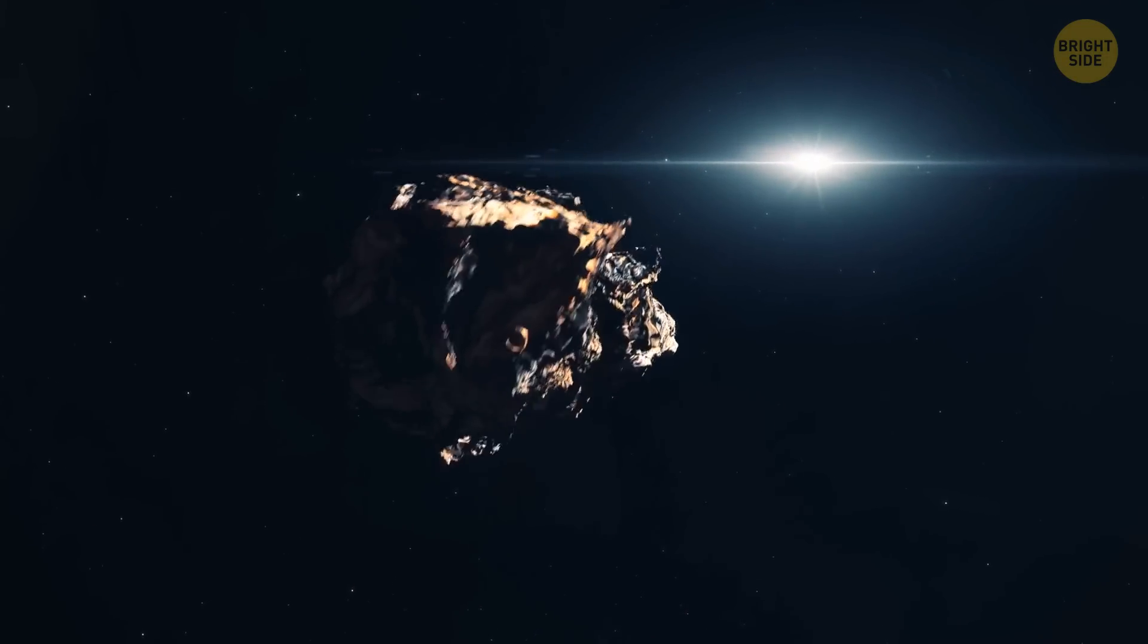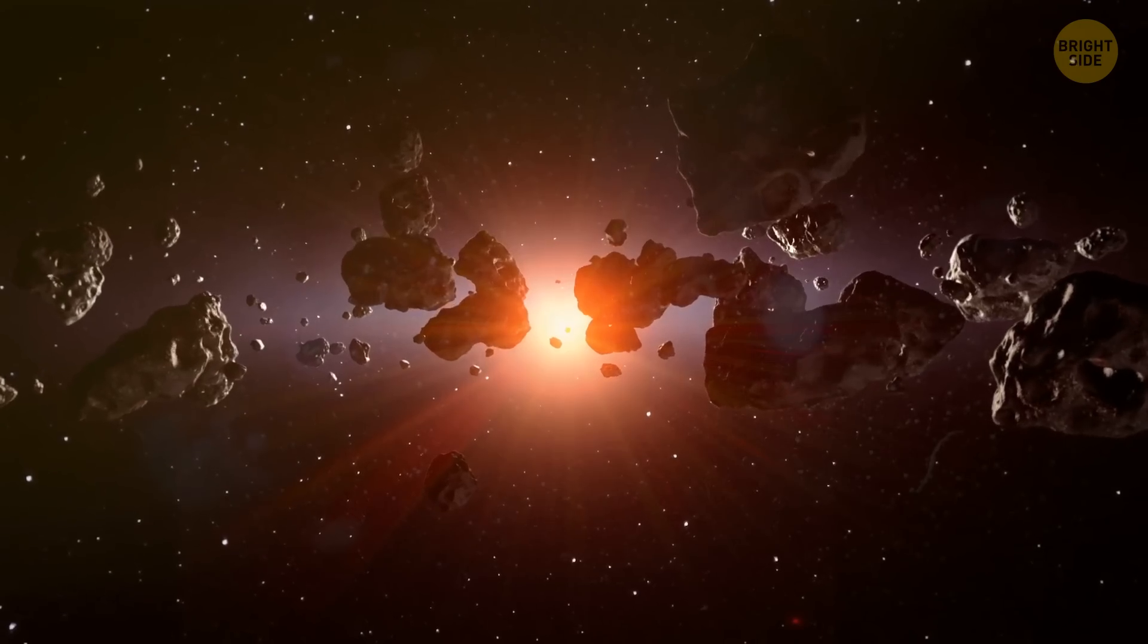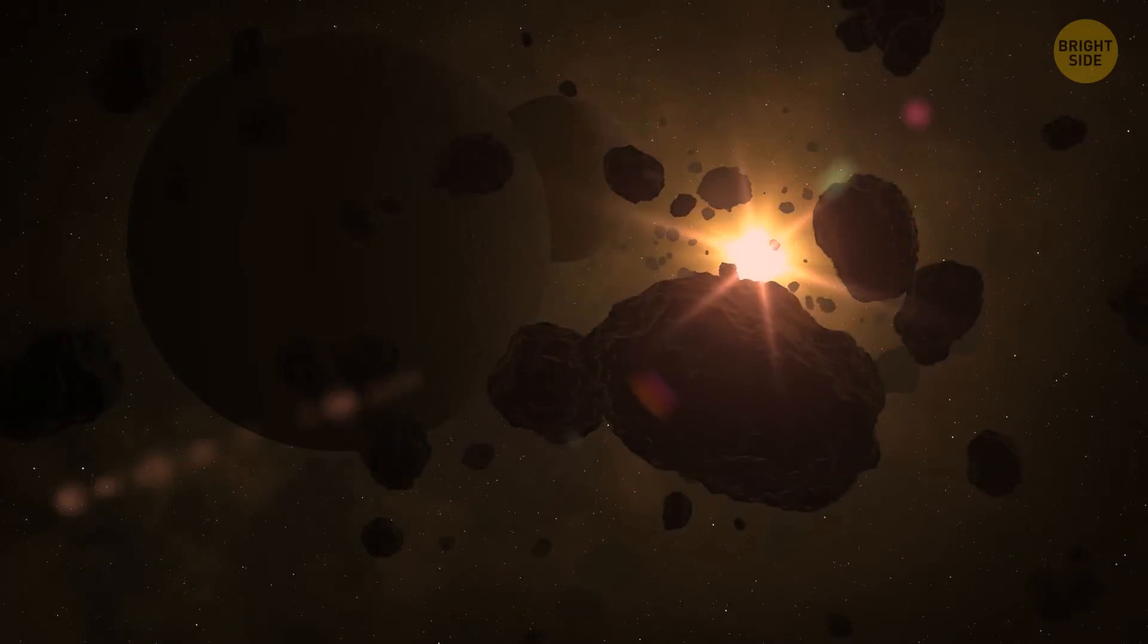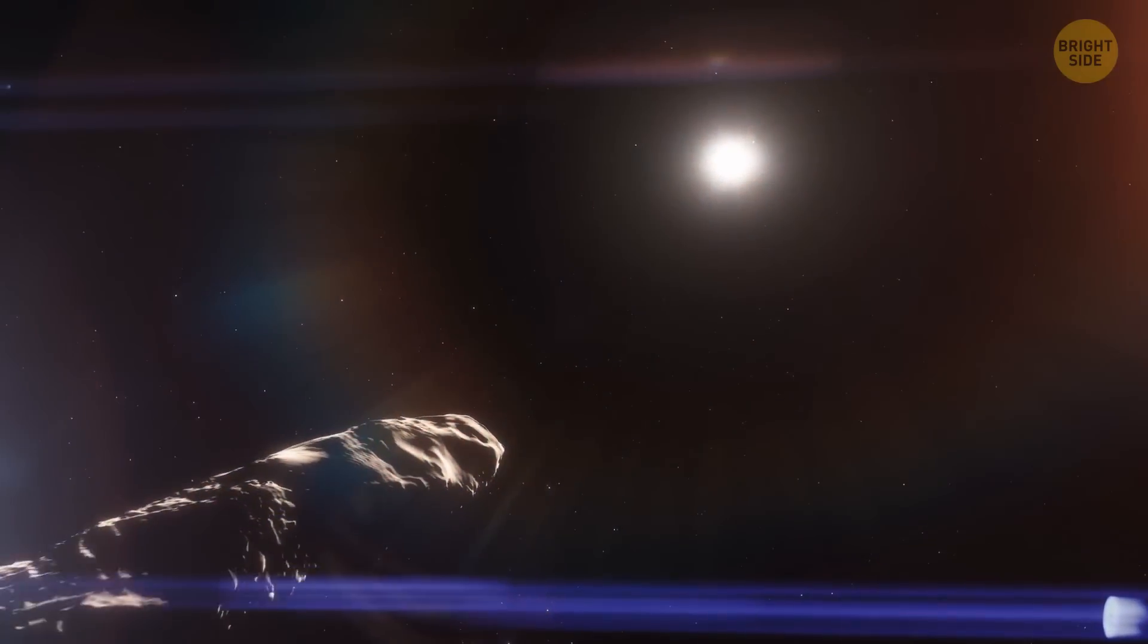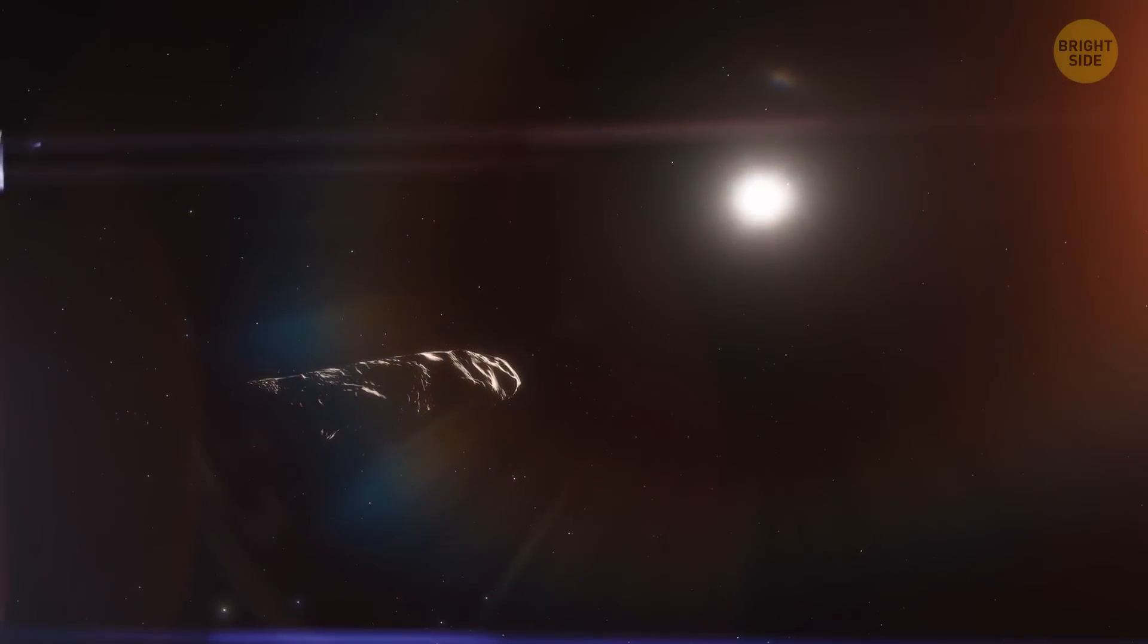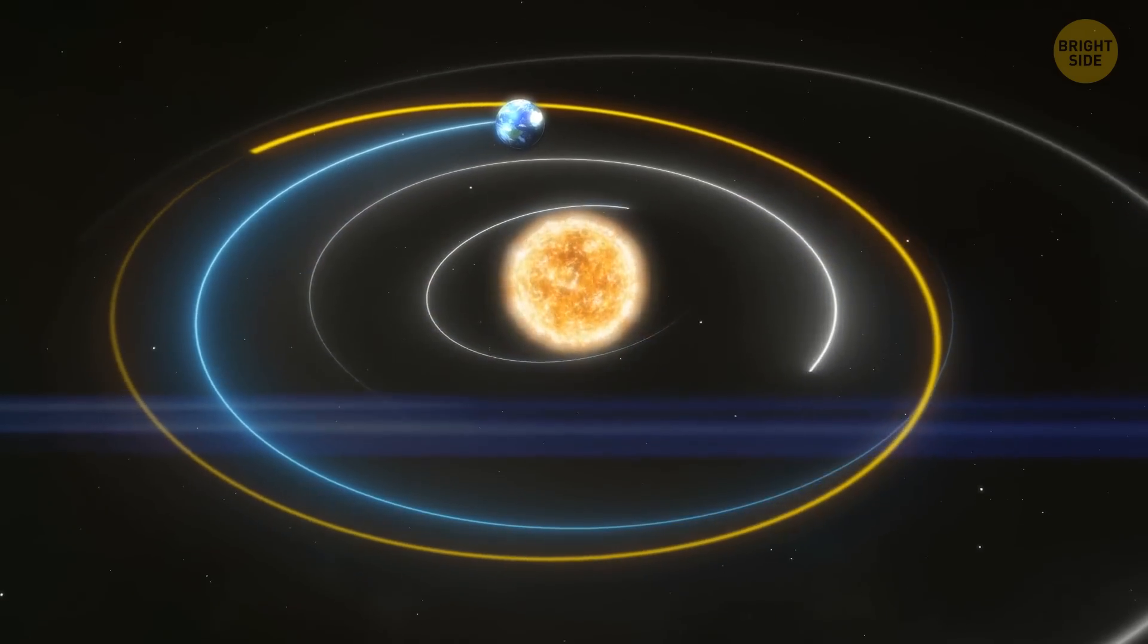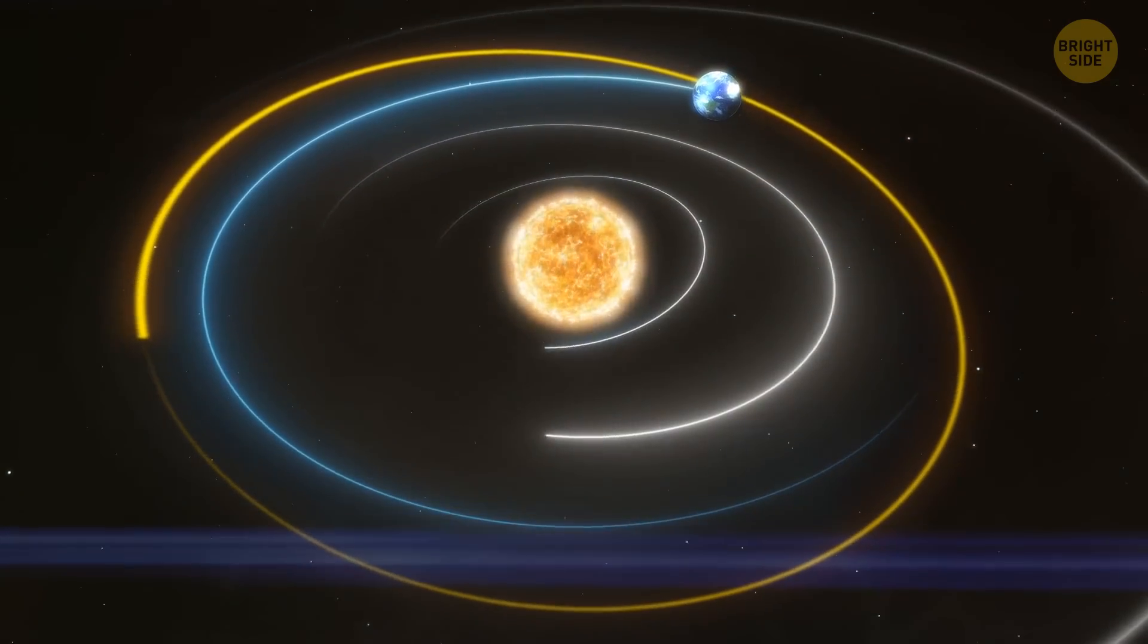Asteroids, however, are mostly made of rock and metal. In our neighborhood, they are remnants of the early formation of the solar system and are typically found in the asteroid belt between Mars and Jupiter. Unlike comets, asteroids do not develop tails when they approach the sun, as they have no ice. Their orbits generally follow more circular paths compared to comets.